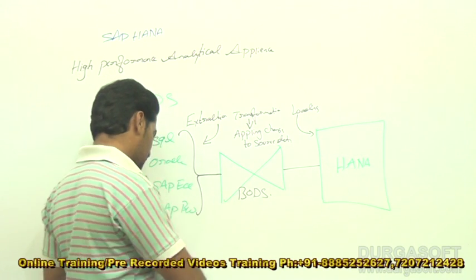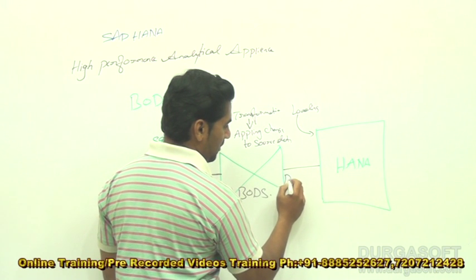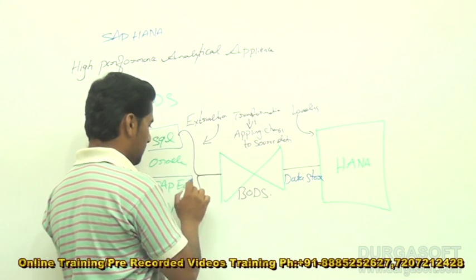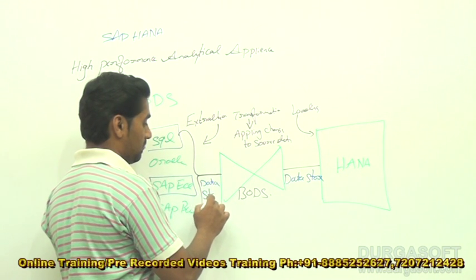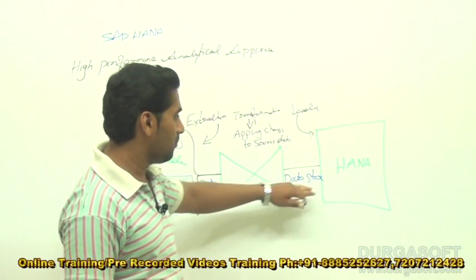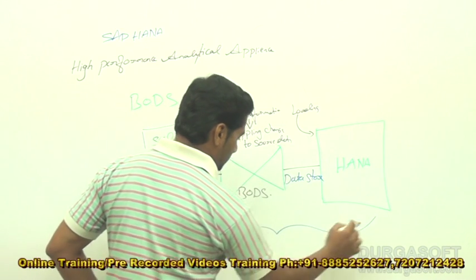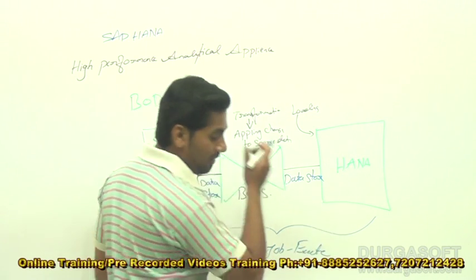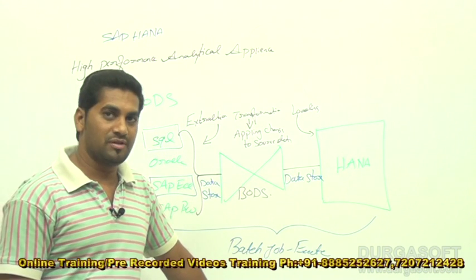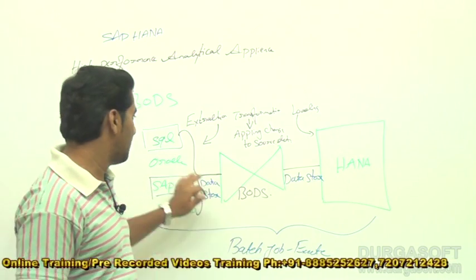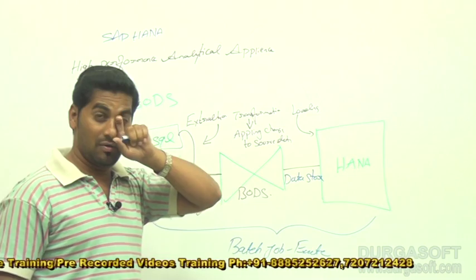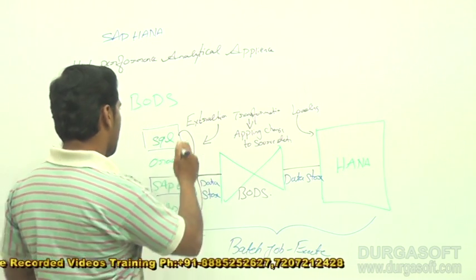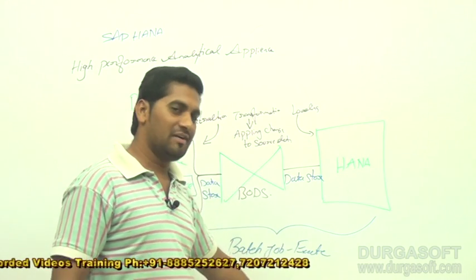To load data, we need to create a connection between BODS and HANA called a data store. We also create a data store connection for SQL Server or SAP ECC as the source. Then we bring tables from SAP HANA to BODS and the entire process runs as a batch job that needs to be scheduled and executed. The steps are: create a project, then a batch job, then a data flow, then define source table, target table, and transformation.